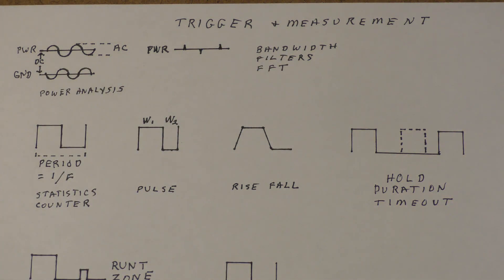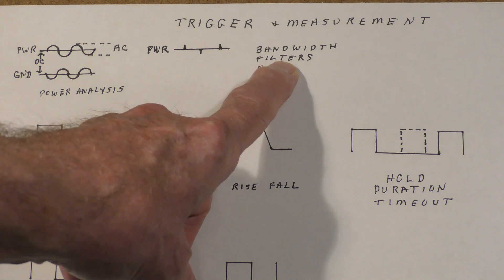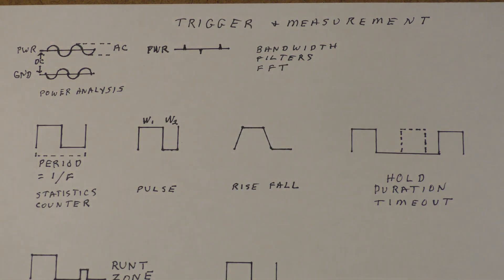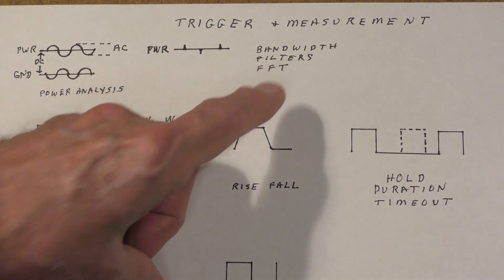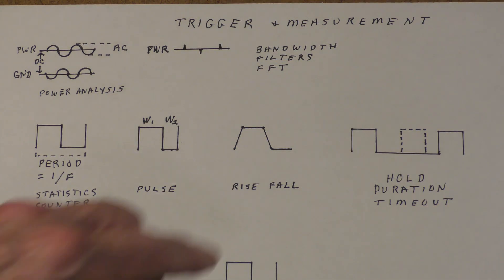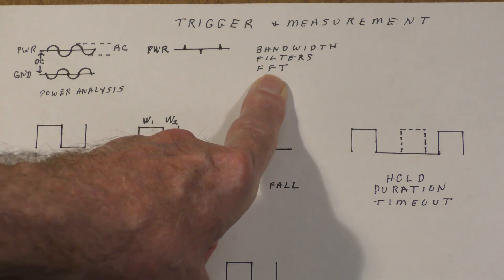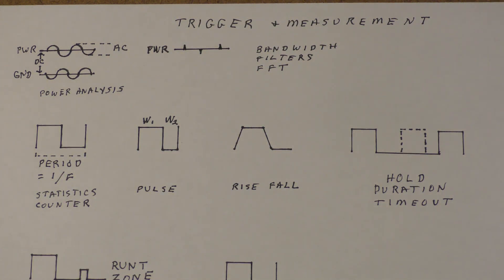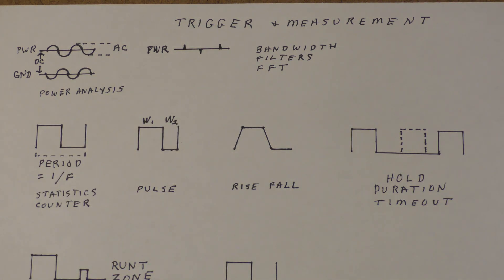Oscilloscopes, including the MSO5000, contain filters that can do things like high and low-pass filtering, which can be useful in eliminating signals from consideration — for example, when trying to get a stable trigger, sometimes it's a good idea to filter unwanted signals out. The last thing you may find useful is to use the fast Fourier transform function to actually look at the frequency spectrum, because that will a lot of times give you a clue as to where these noise spikes are coming from.